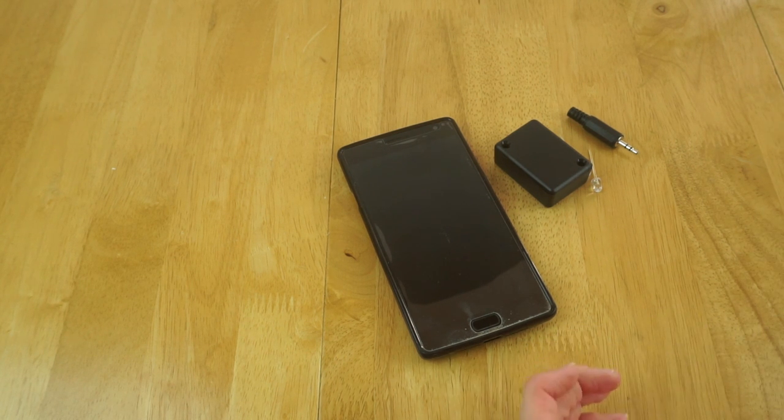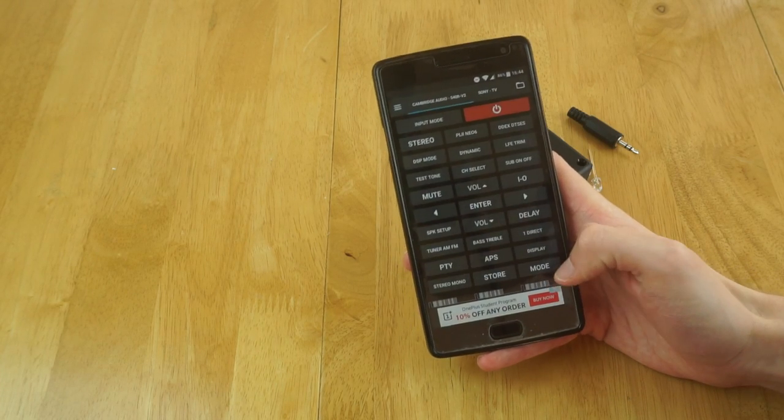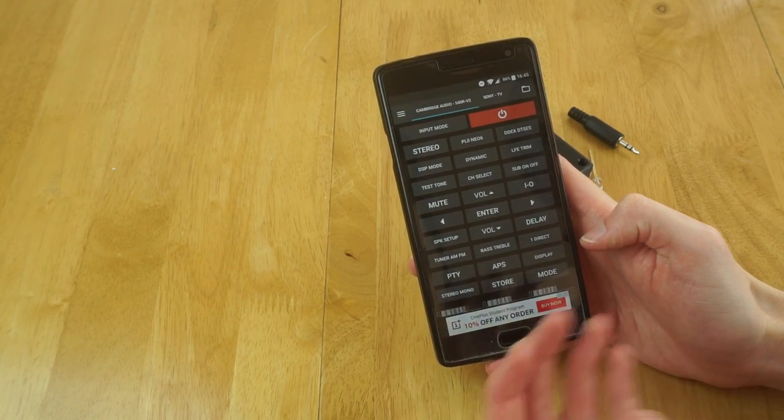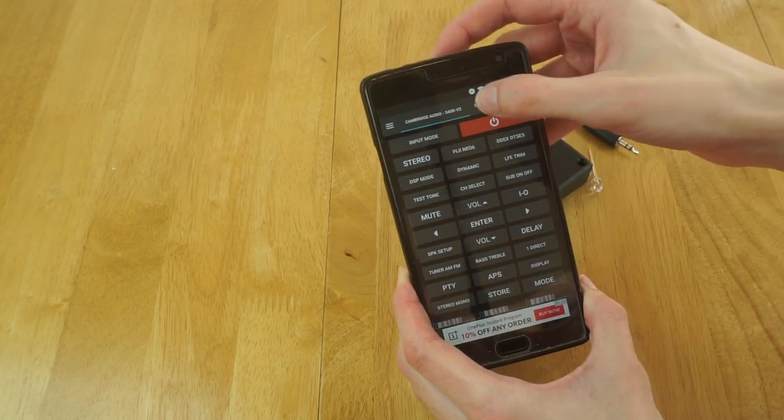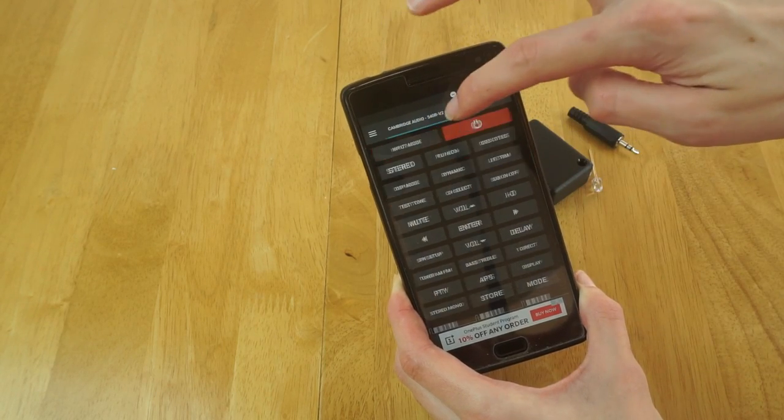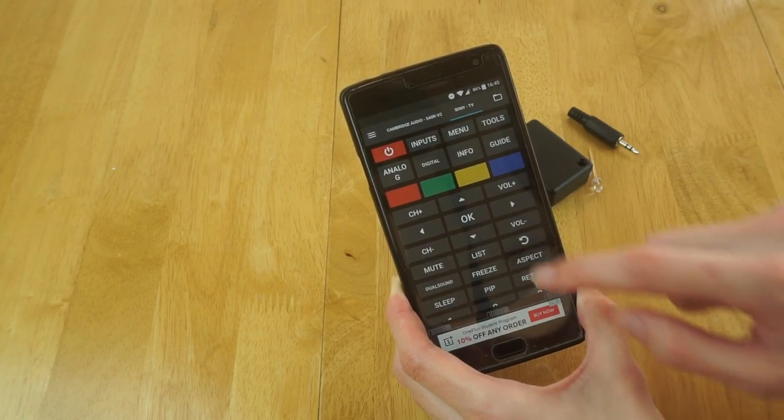In order to make this possible, we obviously need an app on the phone. For this, I'm using one called IR Plus Wave. This is a simple universal remote control app. You can see you just have different remote controls programmed into it, and you can just control it like that.